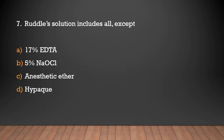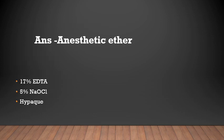Roodle solution includes all except — options: 17% EDTA, 5% NaOCl, anesthetic ether, high pack. Answer: Anesthetic ether. Roodle solution contains 17% EDTA, 5% sodium hypochlorite, and a high pack.